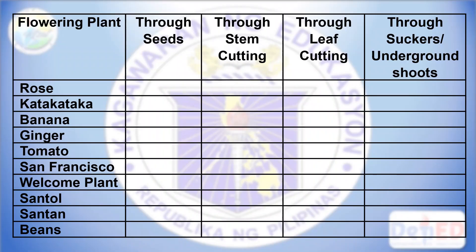Alright, let's check your work. Roses reproduce through stem cutting. Katakataka, through leaf cutting. Banana, through suckers or underground shoots. The same with ginger. Tomato is through seeds. San Francisco, through stem cutting. Welcome plant reproduces through leaf cutting. Santol, through seeds. Santan, through stem cutting. And beans, through seeds.